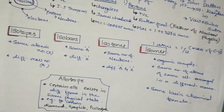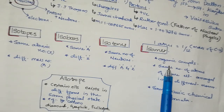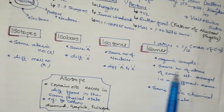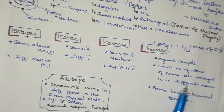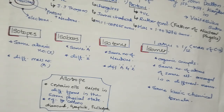Isomers are found in organic compounds. They have the same number of atoms of the same element arranged in a different manner. Isomers have the same basic chemical formula.